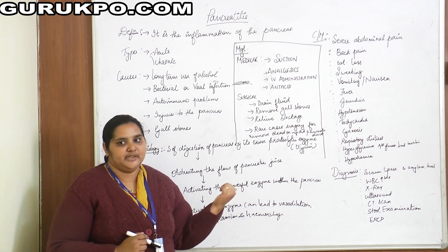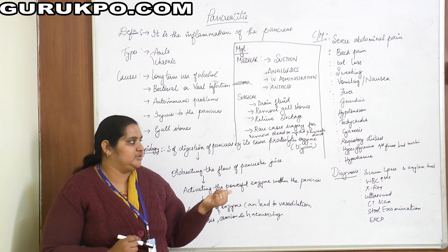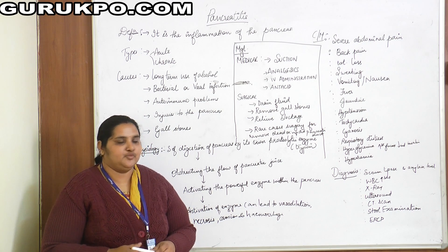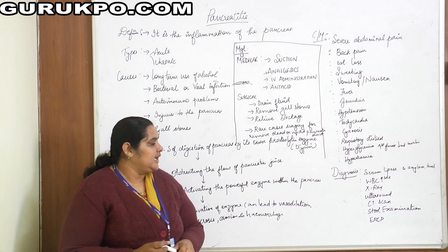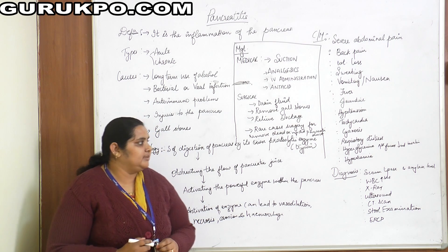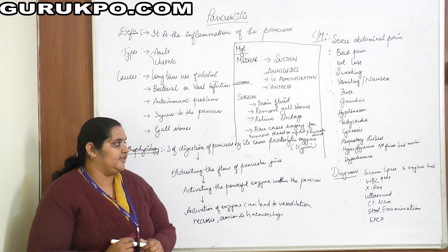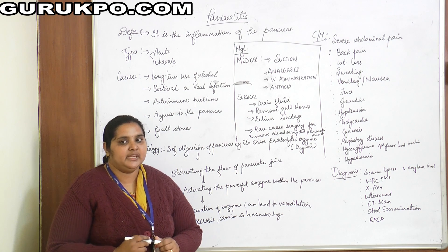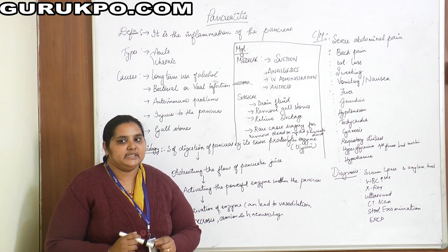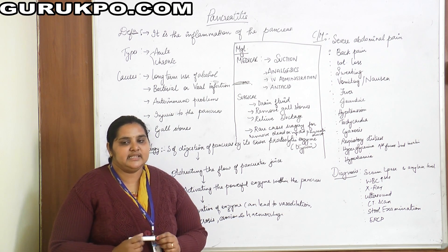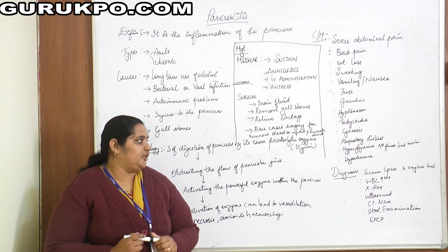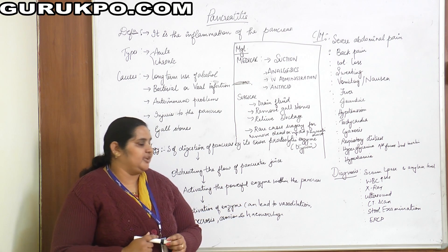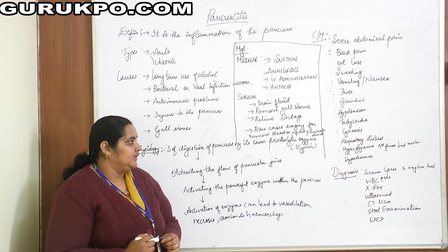Next, hypotension — the patient will have decreased blood pressure. Then tachycardia — increased heart rate. Cyanosis due to necrosis — bluish discoloration of the skin. Respiratory distress may also occur. As insulin production is decreased, the patient may develop hyperglycemia — that is, increased blood glucose and decreased insulin production.